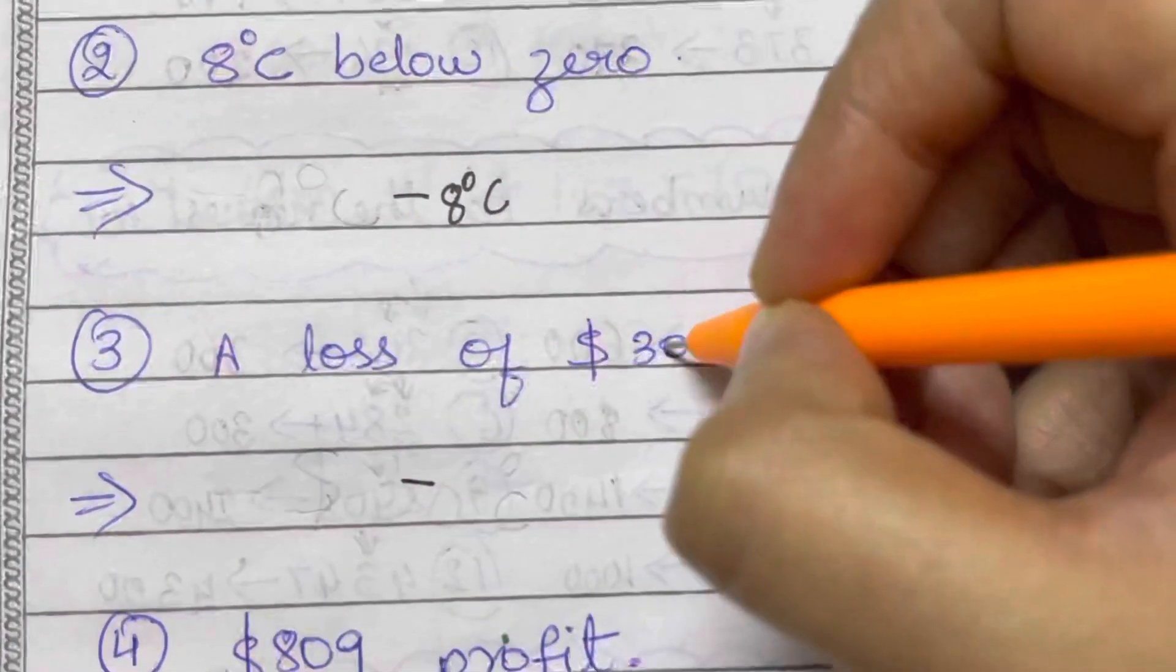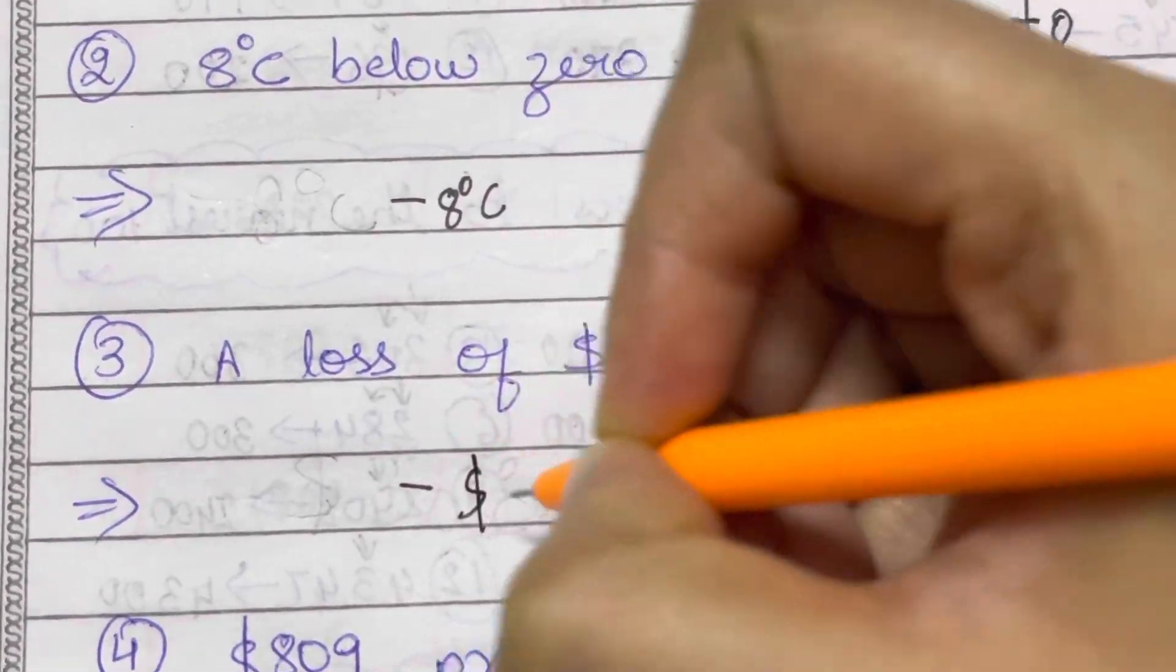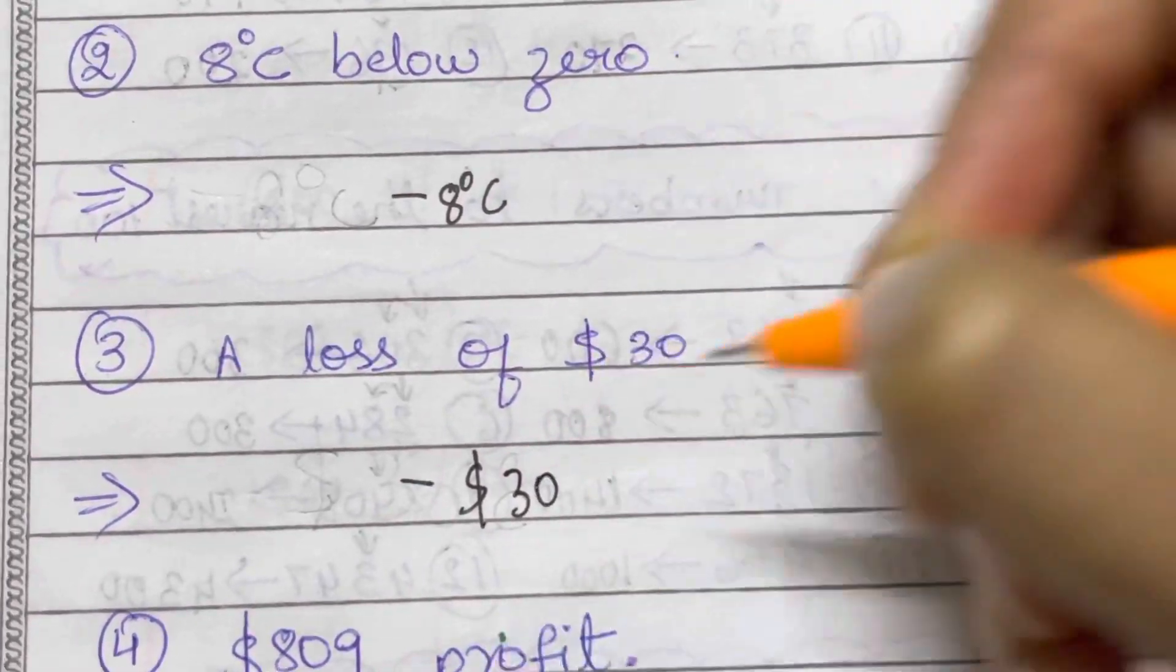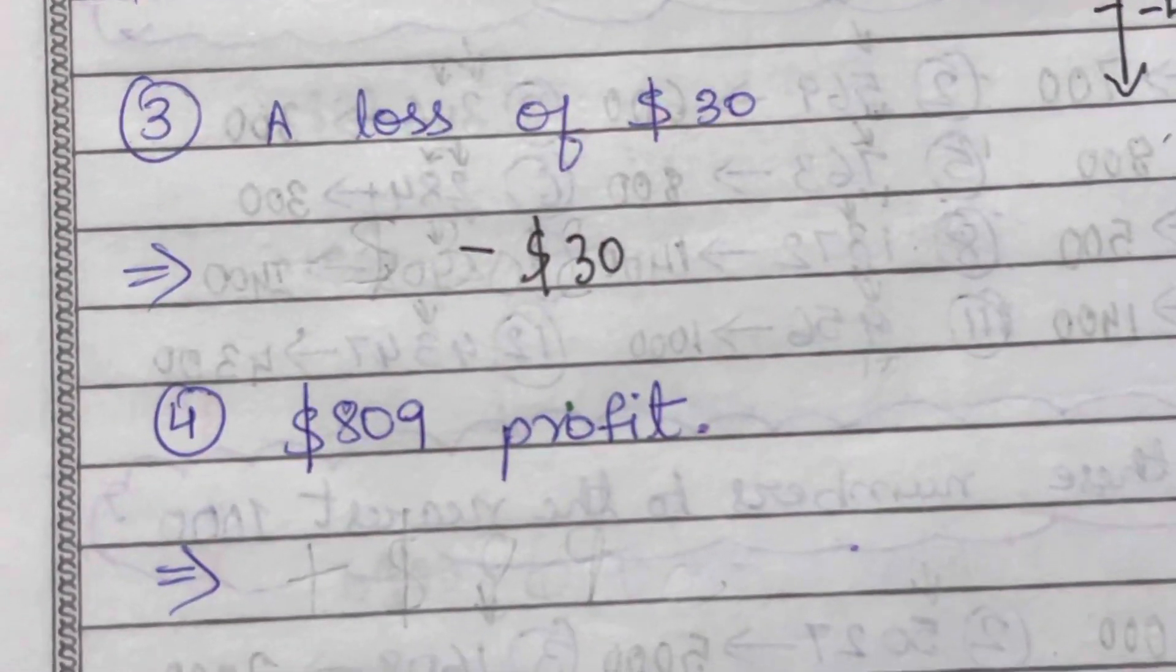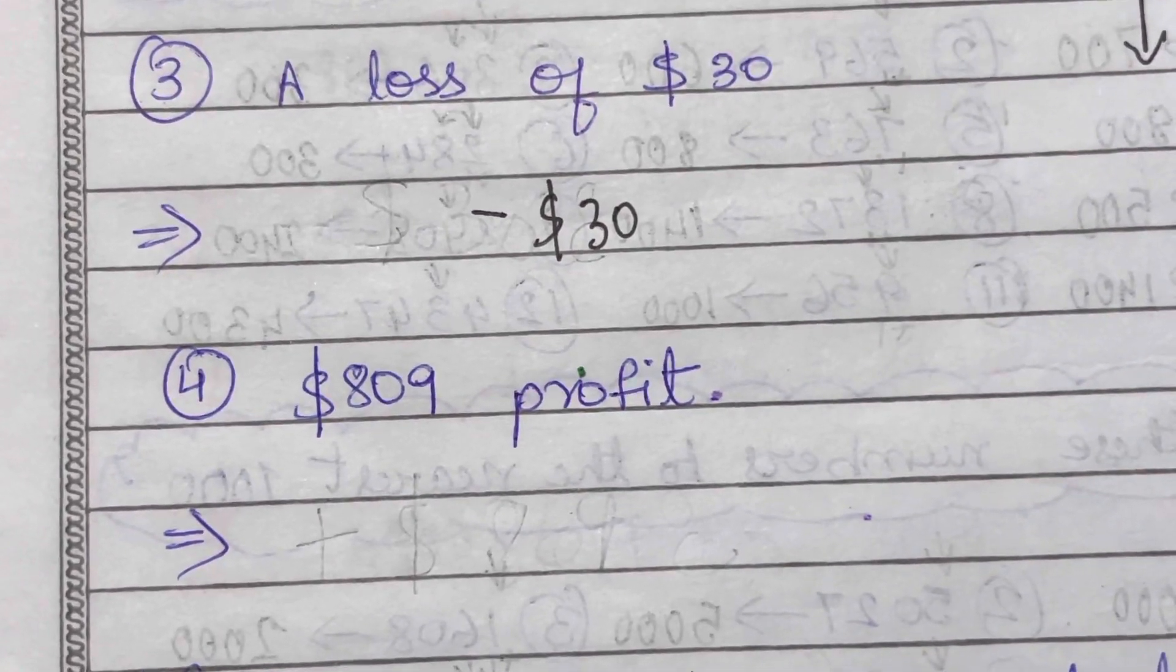Now a profit of 809 dollars. So profit will be represented by a positive sign - plus 809 dollars. That's it.